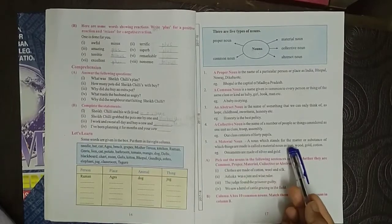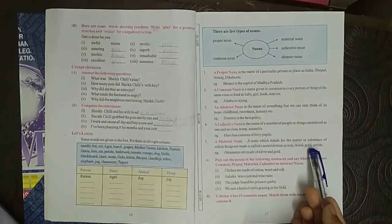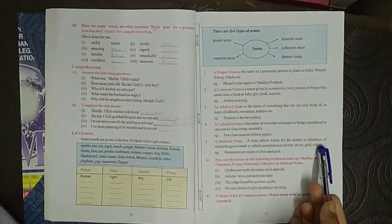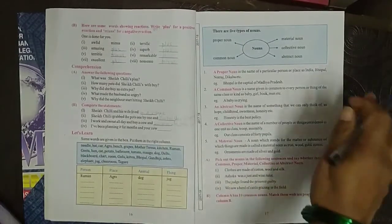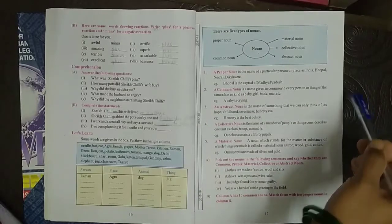It is called a material noun, as iron, wood, gold, cotton. So it is all related with the materials like this wood, this is a wooden table.